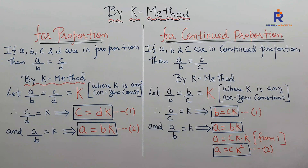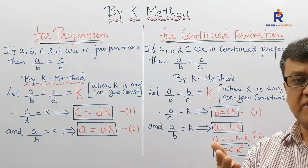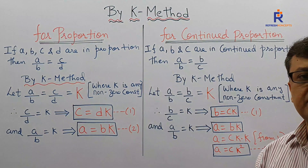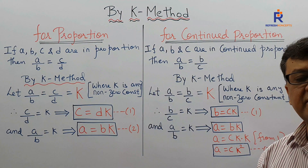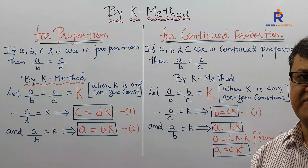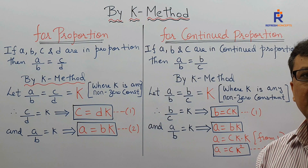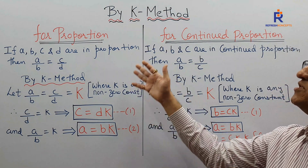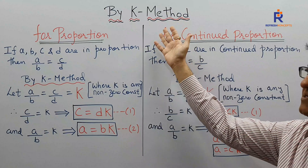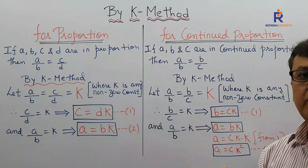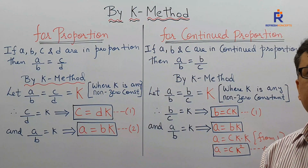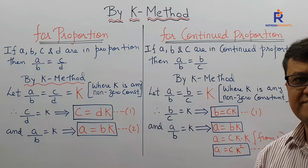Many boards don't have four terms in proportion, only three. But on higher-order sums, they might ask for four or even five terms — I have given you the basics for that also. Just pay attention to K method, as it is mainly used for proof sums.